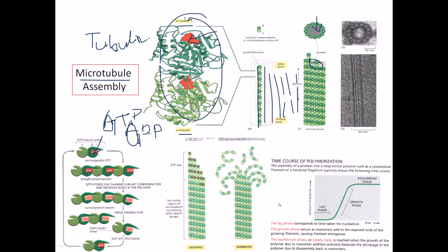When the GTP-bound active dimer attaches with another dimer, and then another, it forms a polymer of tubulin. When this tubulin polymer is arranged in a cylindrical arrangement, it is called a microtubule. After some time, when GTP is hydrolyzed to GDP, the tubulin becomes very unstable and dissociates.